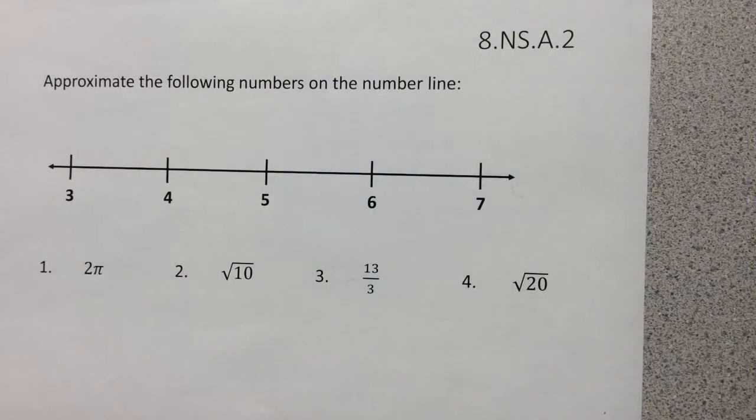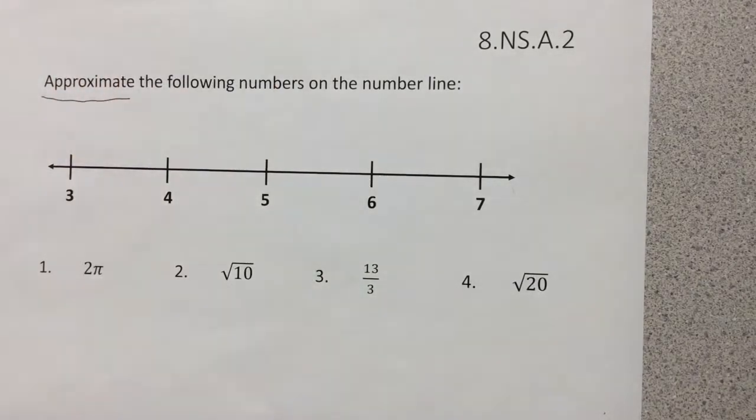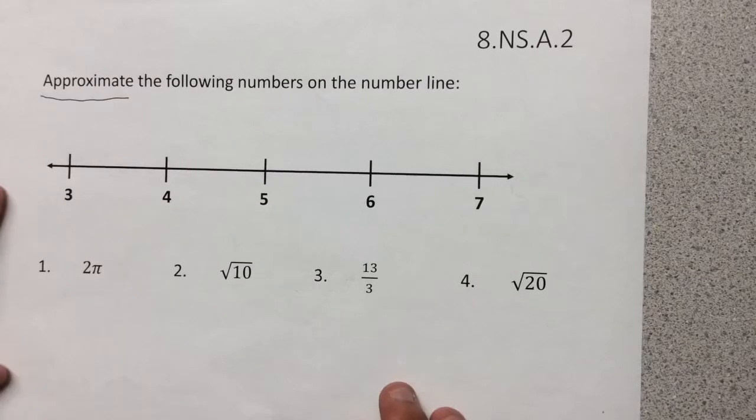We are going to go over how to approximate numbers on a number line. As you can see here, we have both irrational numbers and rational numbers. When it says approximate, that doesn't mean that you have to know exactly what the number is to the decimal point. We just want to make a roundabout guess of where it's at, but we want to try to guess as close as we can.